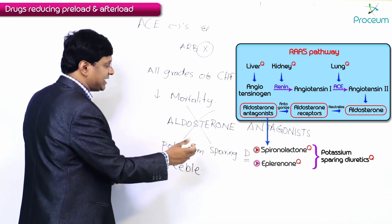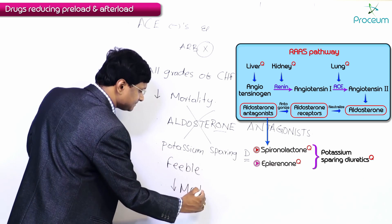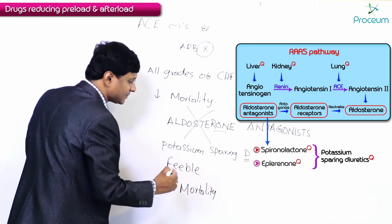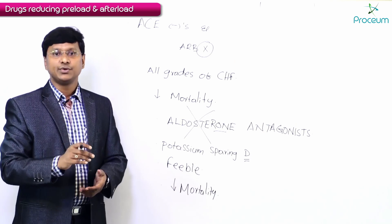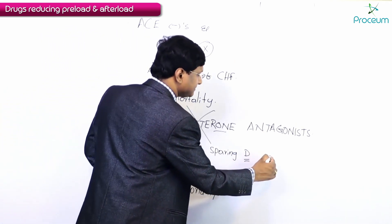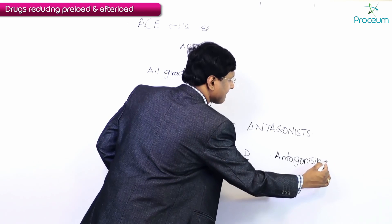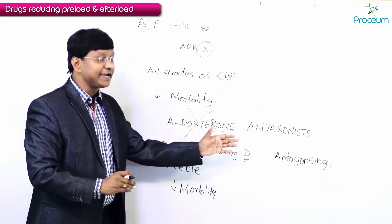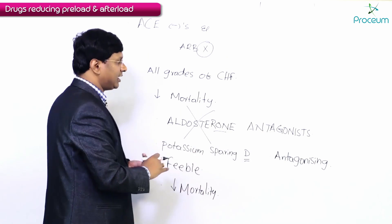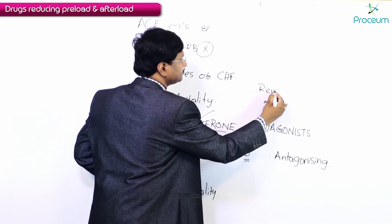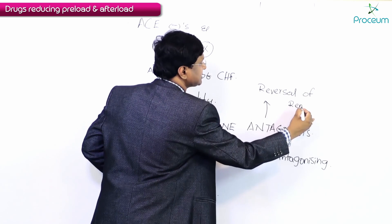The advantage of giving aldosterone antagonists is to neutralize the aldosterone formed by the RAS pathway. These drugs will also reduce mortality in the individual by antagonizing the effect of aldosterone, causing reversal of cardiac remodeling.